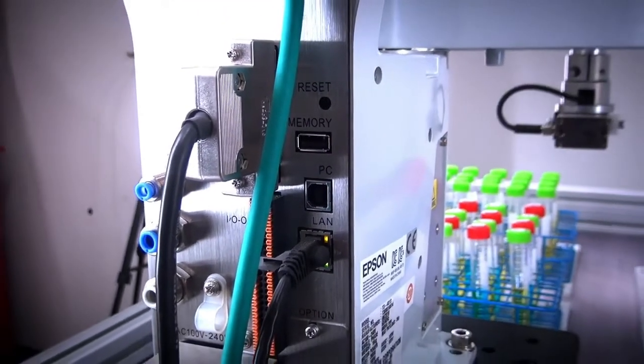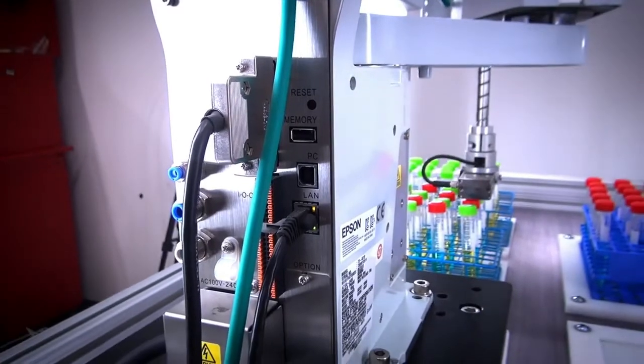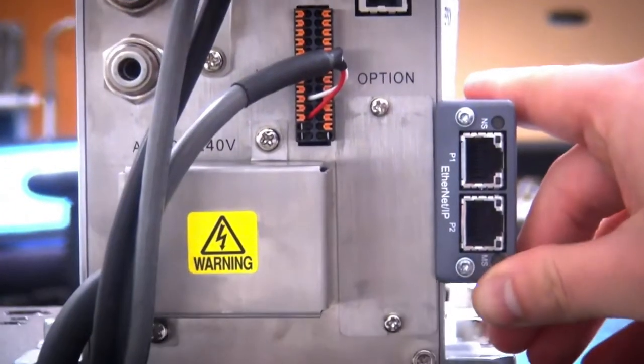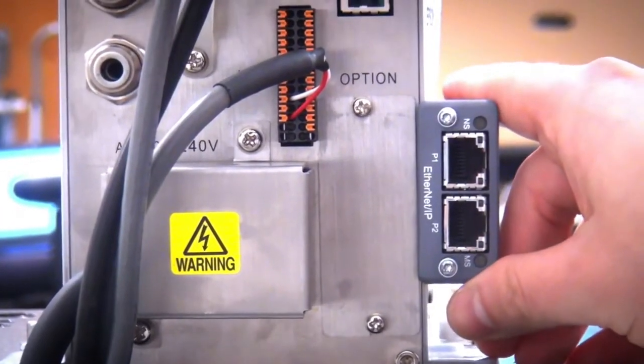You have a USB port for a thumb drive so that you can obtain a backup of your controller on the fly. You also get an additional USB type B port connector or an ethernet port connector to allow communication between the robot controller and the computer running Epson RC plus software.